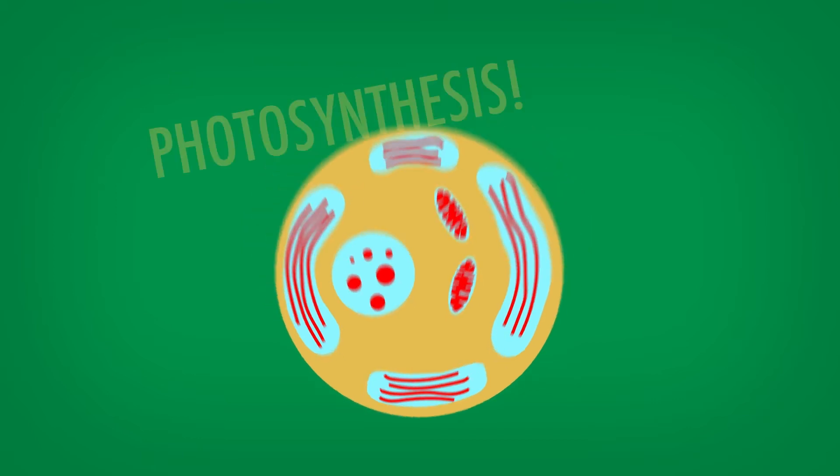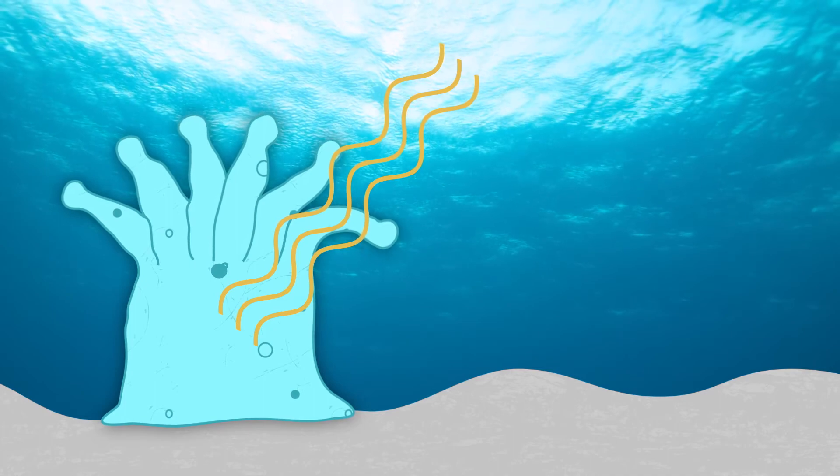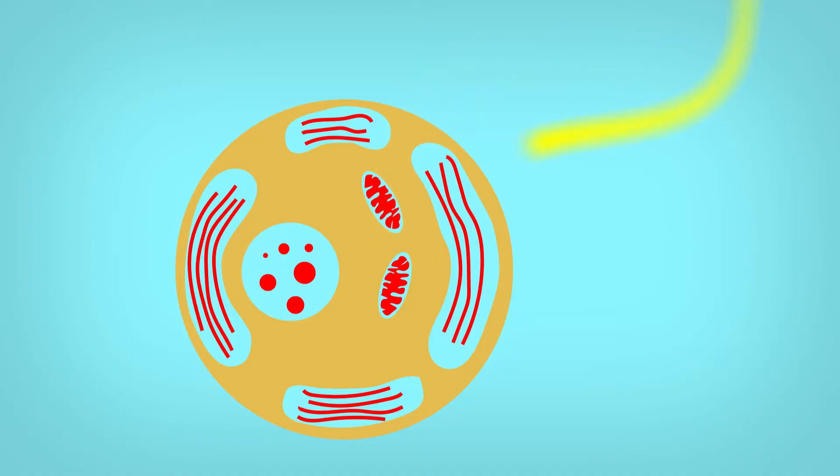Being algae, they can do a neat little trick called photosynthesis, wherein sunlight coming down through the shallow water goes into the coral polyp and hits the symbiodinium, which then uses that energy to build sugar. Some of that sugar leaks out of the symbiodinium and helps feed the coral polyp.